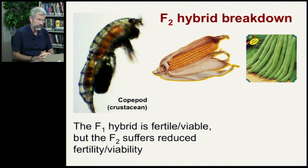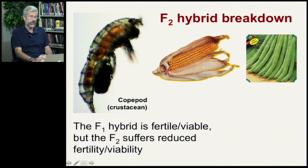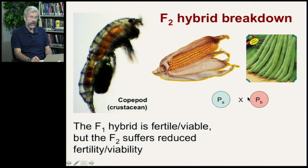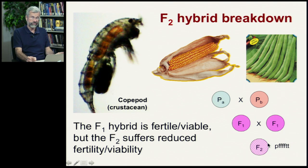The third way things can go wrong with hybrids is called F2 hybrid breakdown. The mule is an F1, and that F1 was infertile due to problems with meiosis. But in other species — such as copepods, maize, or green beans — you can cross two species and get an F1 that's fertile and viable. However, when you cross that F1 with another F1, the F2 doesn't work. You have the parental species A crossed with parental species B, the F1 is fine, but then cross the F1s together and it all falls apart — that generation is either infertile or inviable. So that's the end of that.